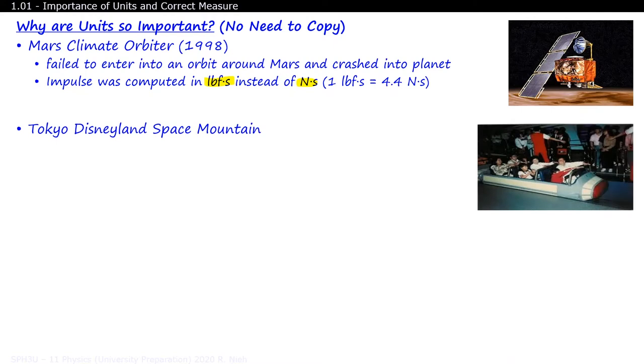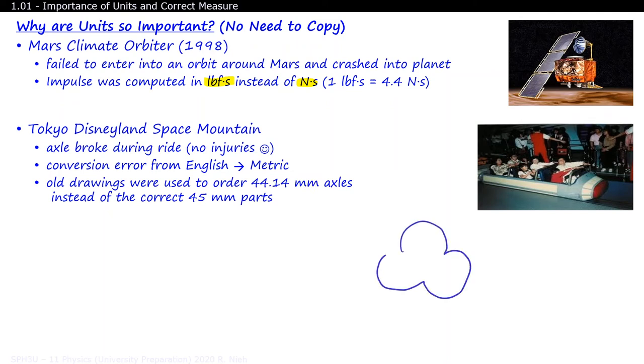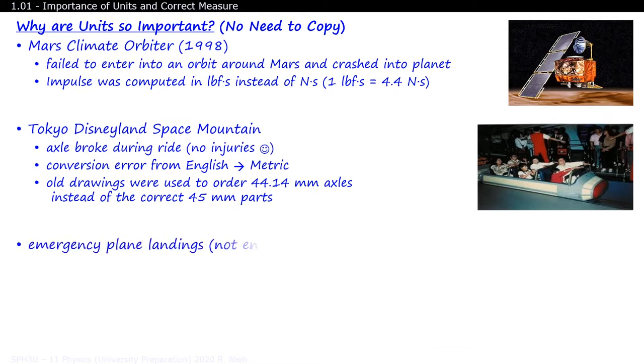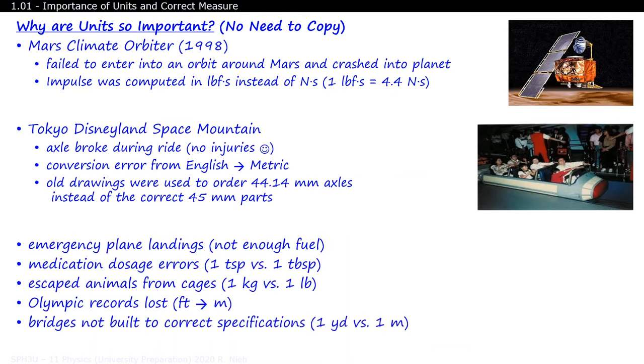Have you ever been on Space Mountain? There are currently five of them in the world. Japan had a cloned version of the original Florida one. However, there was a conversion error for one of the parts, called the wheel bearings. You remember fidget spinners? Yeah, those bearings. The bearings ordered were too small and caused the axle to rattle back and forth and eventually break. Luckily, no one was injured in this incident. Today, one inch is exactly 2.54 millimeters. There are plenty of examples where things have gone wrong simply because of miscommunication or assumption of units. So that's why it's so important to include units in all of your measurements. How about I give you 3 seconds until the next slide.